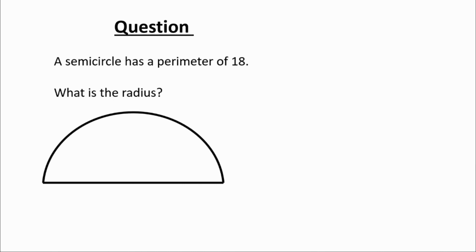What we can do now is start solving this question. So we've got a semicircle with a perimeter of 18. We need to find what the radius is. So let's remember our equation from before.